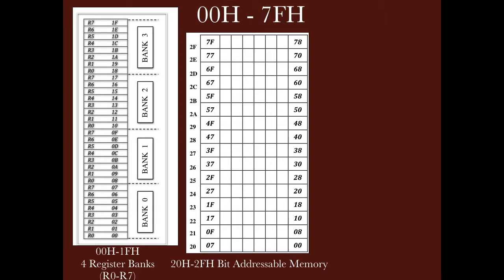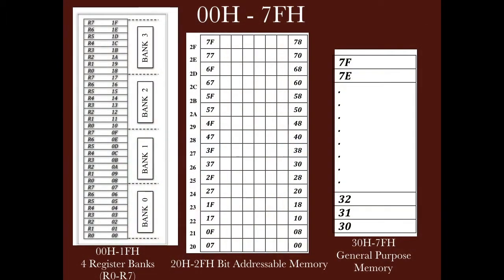We can also perform bit-related operations directly. The bit-addressable memory range is 20H to 2FH, which is a total of 16 bytes, meaning 128 bits. So in 8051, we can control bit-wise data across 128 bits. After that, we have byte-addressable memory from 30H to 7FH. That completes our lower 128 bytes detail from 00H to 7FH.